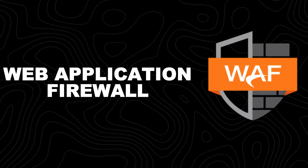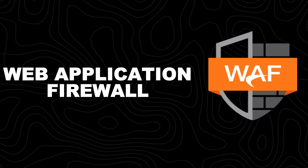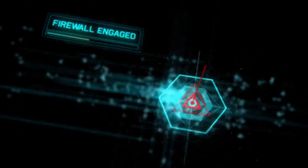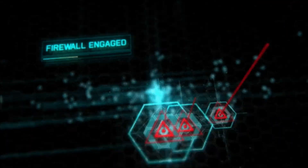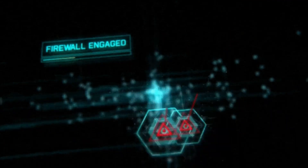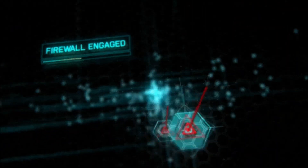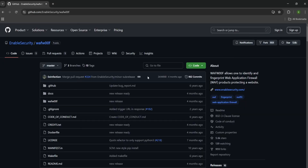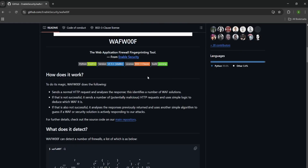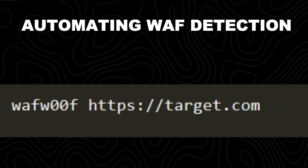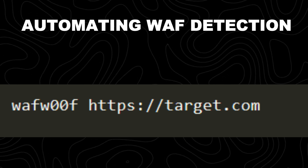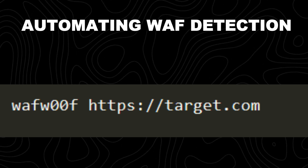Number 17: automating WAF detection. Web Application Firewalls (WAF) are security mechanisms designed to filter, monitor, and block malicious traffic. Identifying the WAF protecting a target website is crucial in penetration testing and bug bounty hunting because different WAFs have different rules, bypass techniques, and vulnerabilities. Automating this process with WAFW00F helps quickly determine which web application firewall is in place. This command automates WAF detection using WAFW00F, a tool designed to identify and fingerprint WAFs protecting a website.